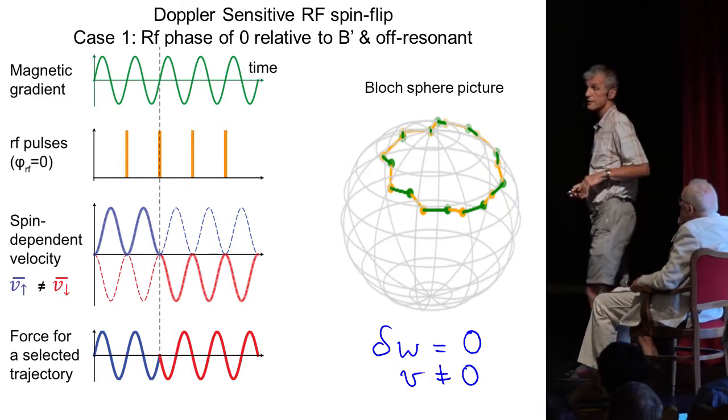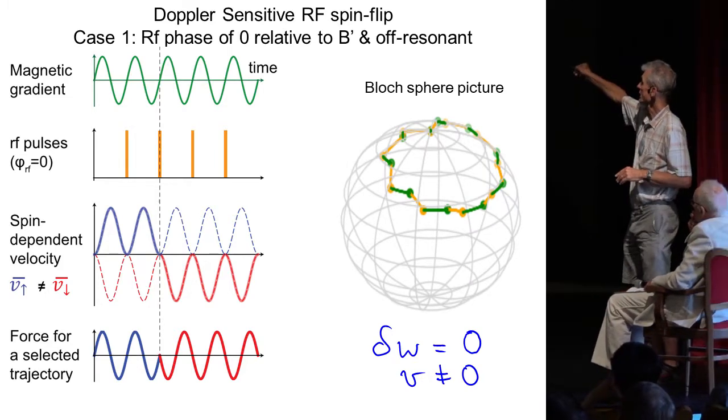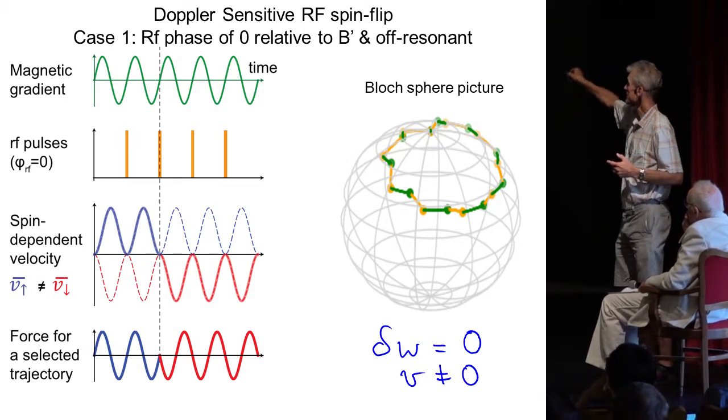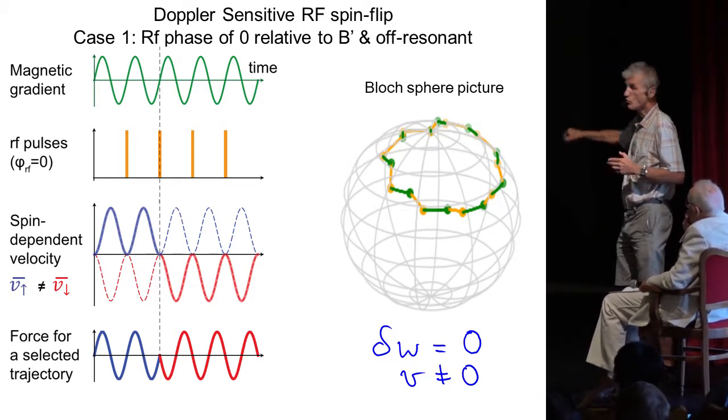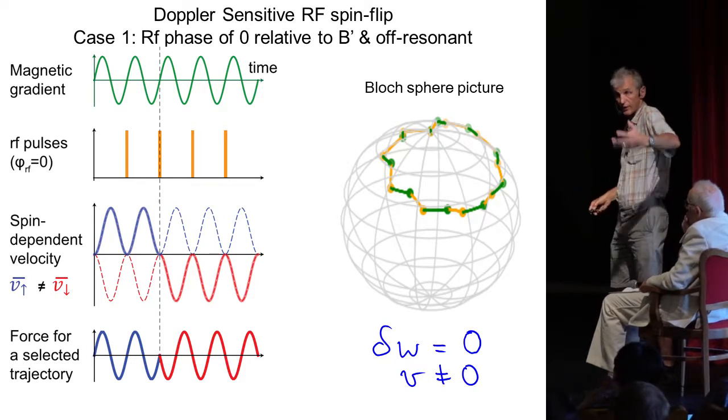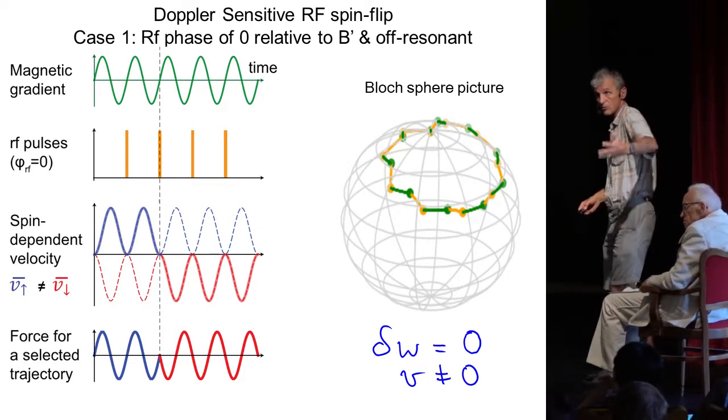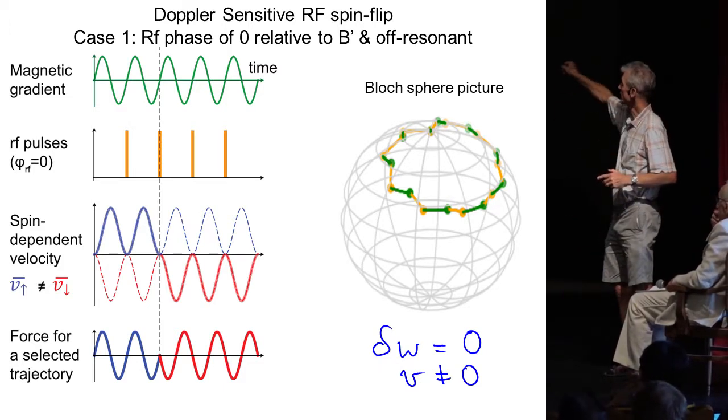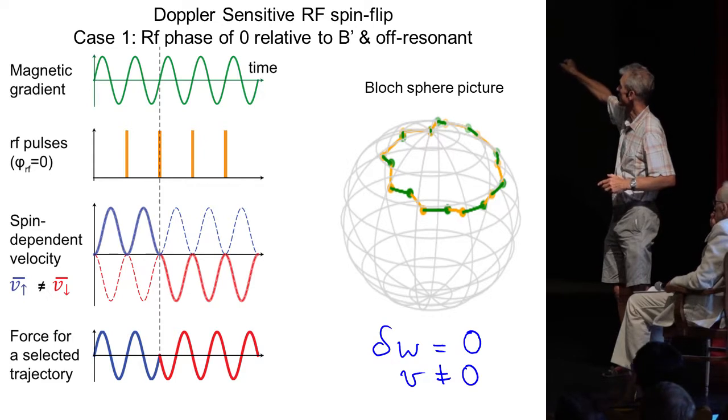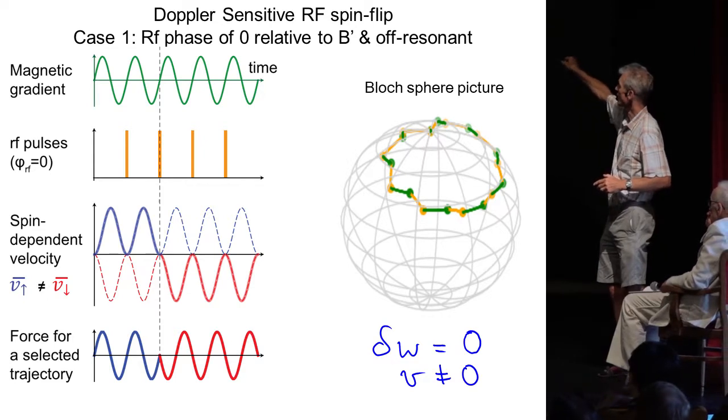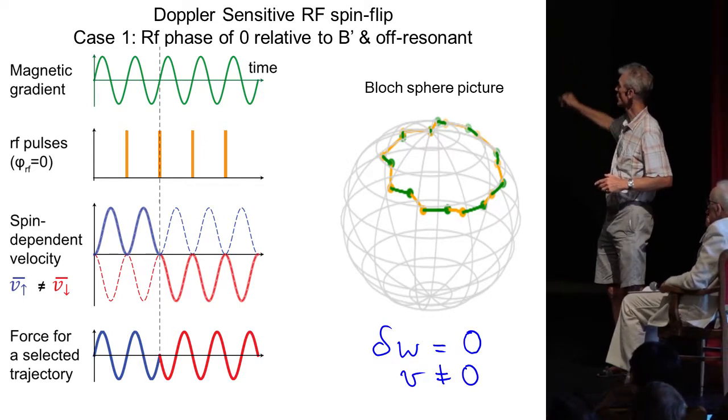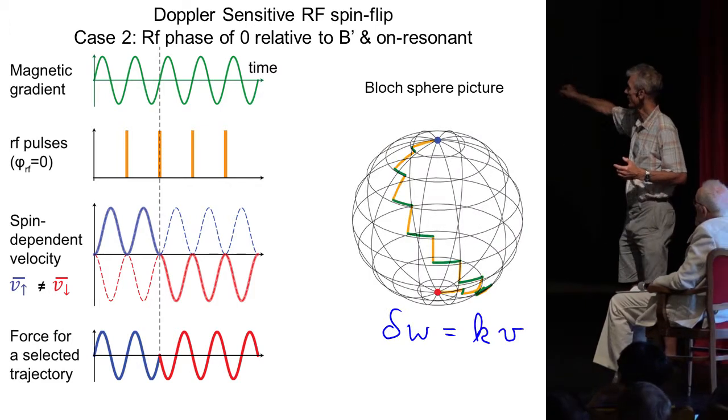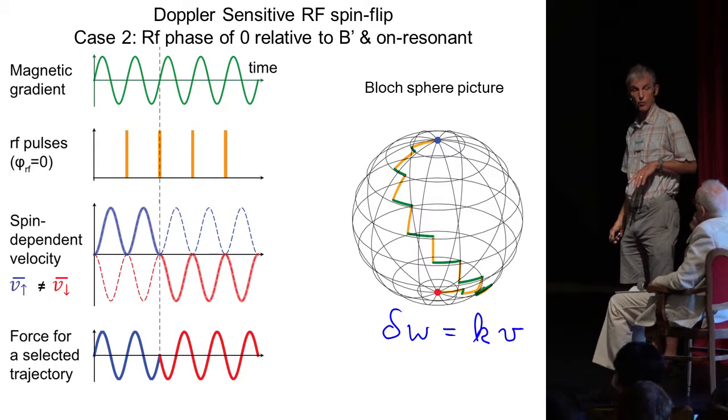You can nicely illustrate that on the Bloch sphere. If you start with a spin up atom and you would have the frequency on resonance, the detuning, the differential phase accumulated due to the different kinetic energy would mean that you are not in resonance. You get phase shift and you never go from the north pole to the south pole. But if you detune by the Doppler shift, you will eventually have Rabi oscillations between north and south pole.